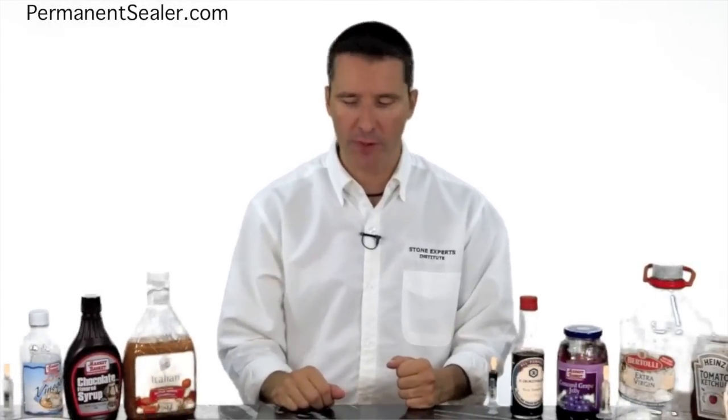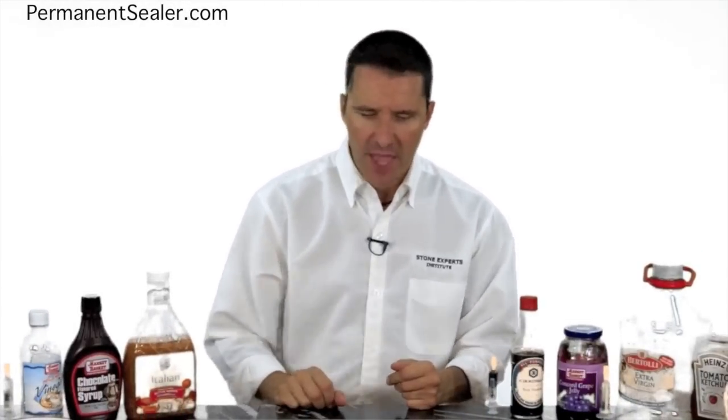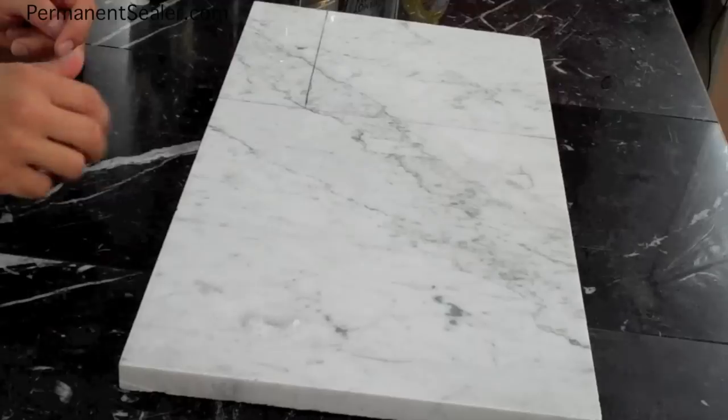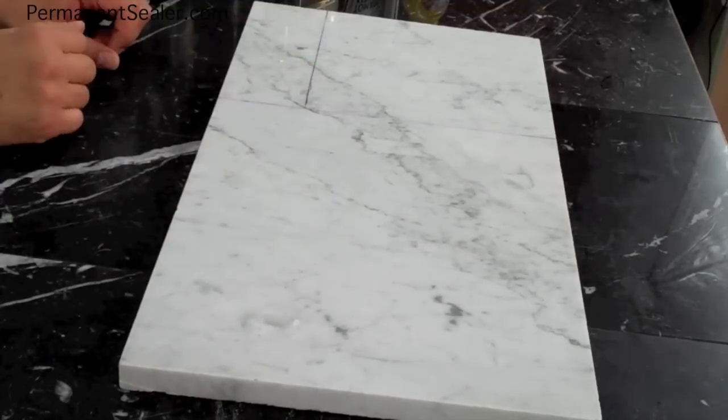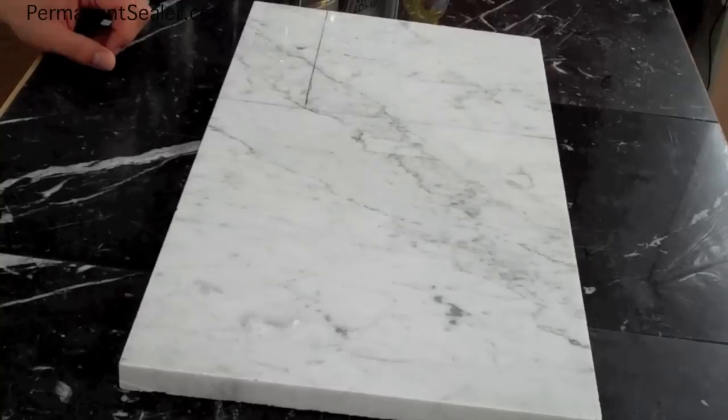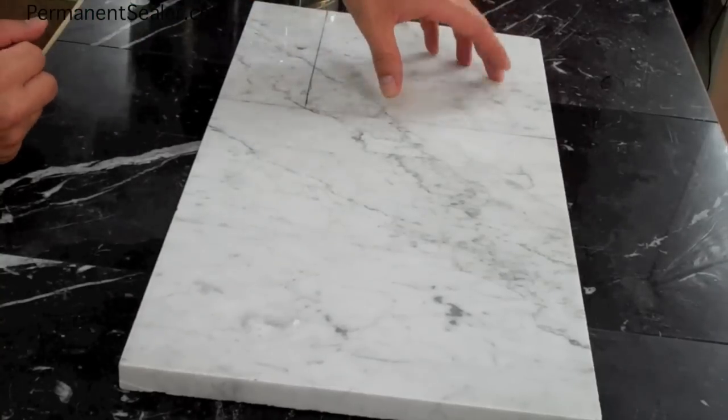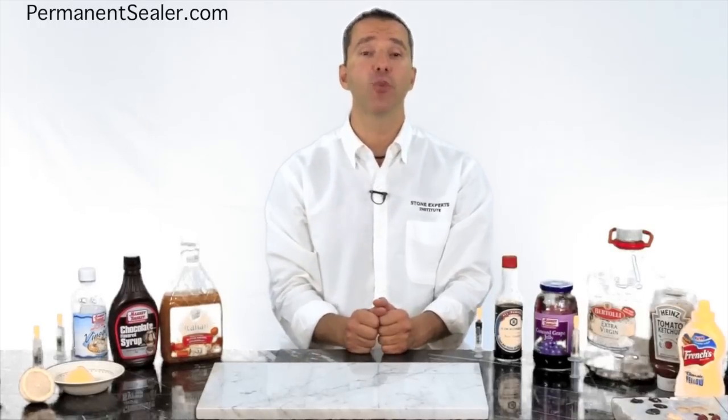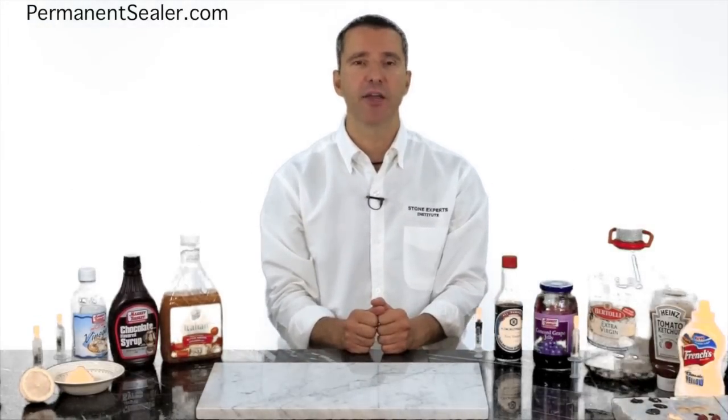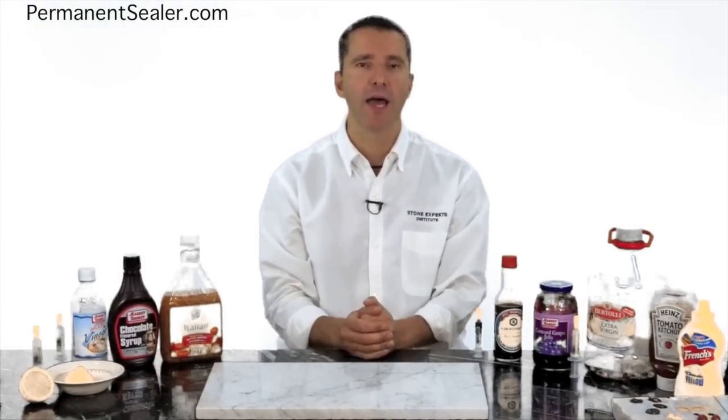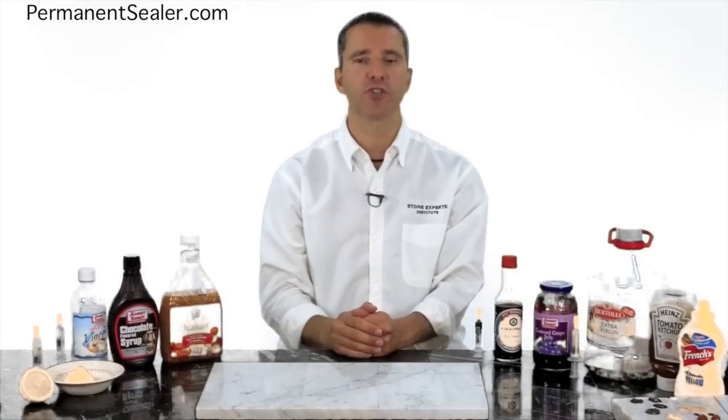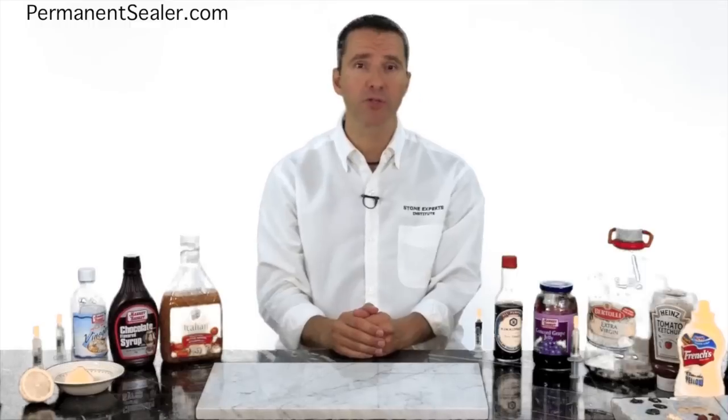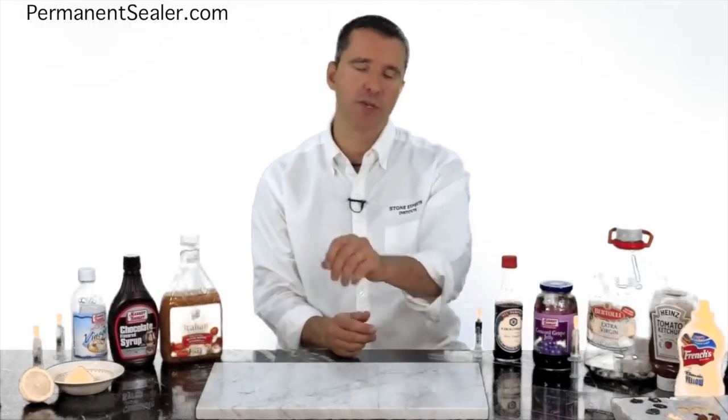Next we have the white Carrera marble, a polished marble. We have the permanent sealed side right here, nothing sealed in this quarter, and over here a section sealed with another sealer. It's a 15-year warranty sealer that I got at one of the box stores, a little bit on the upper scale of price range, not one of the cheap ones but one of the more expensive ones, because I want to show you exactly what that does. Again, it's got a 15-year warranty.